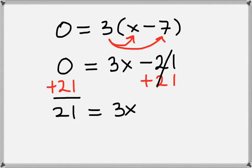Now we want to get x by itself, so we'll divide by 3 on both sides. And that leaves us with x on the right-hand side and 7 on the left-hand side. So we have x equals 7.